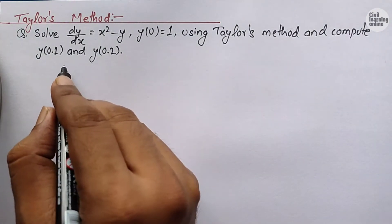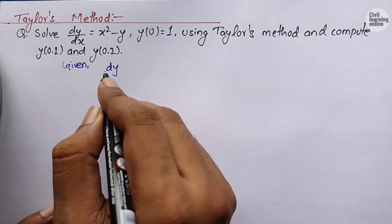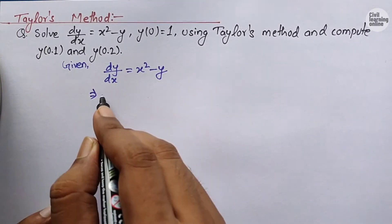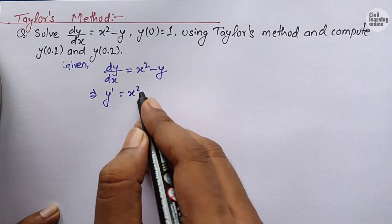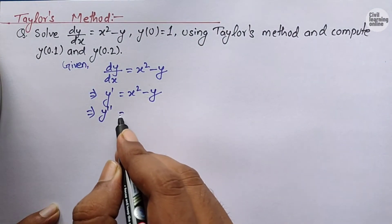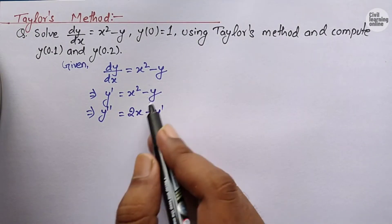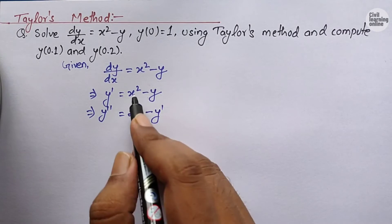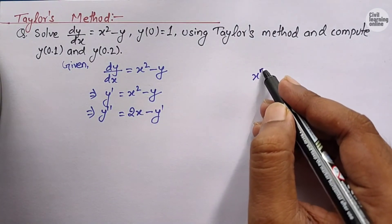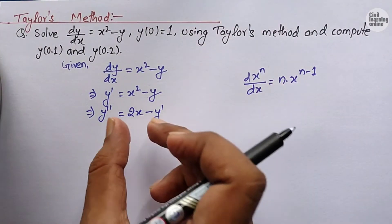First, let us look at what we are given. We are given that dy/dx equals x squared minus y, which we can also write as y' equals x squared minus y. Now let us find the derivative of this term. We will have y'' equals 2x minus y', because the derivative of y with respect to x becomes dy/dx which equals y', and the derivative of x squared is 2x, using the formula d/dx(xⁿ) = n·xⁿ⁻¹ with n equals 2.